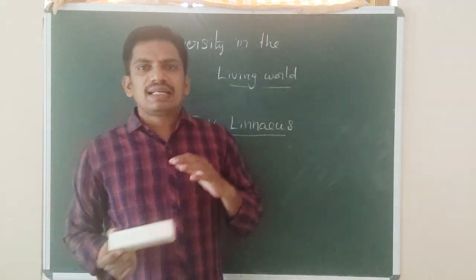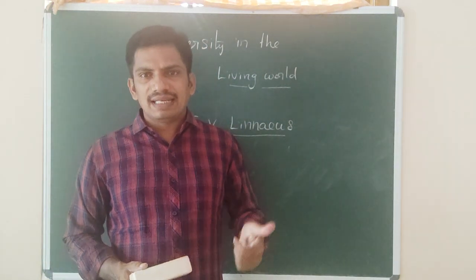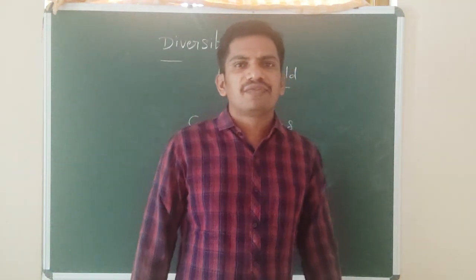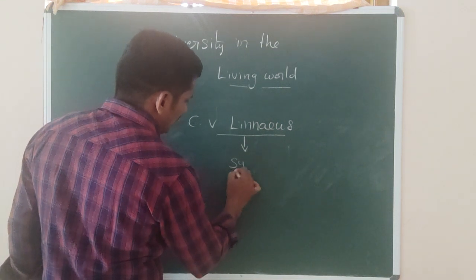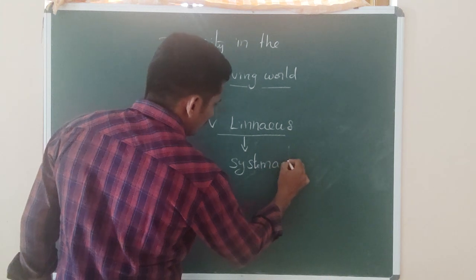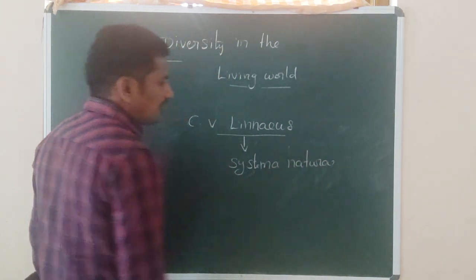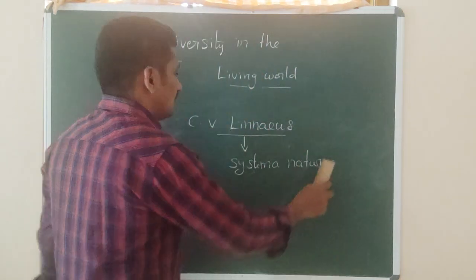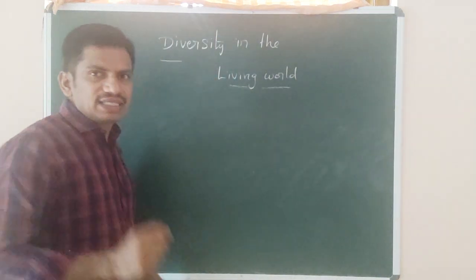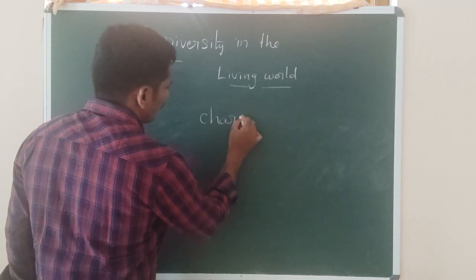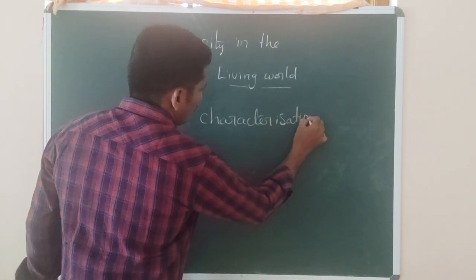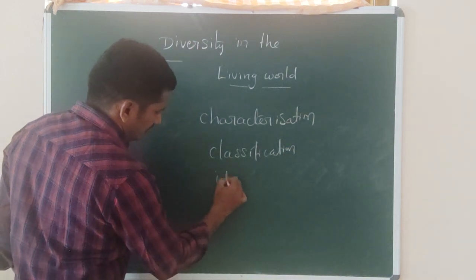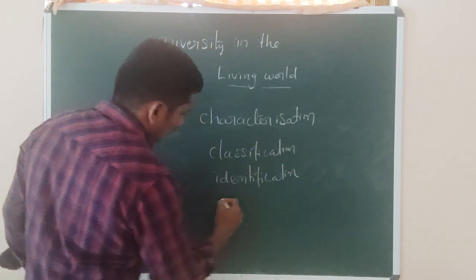Taxonomy deals with the characterization, identification, classification, and naming of organisms. Carolus von Linnaeus is considered the father of taxonomy. His publication, Systema Naturae, classified different organisms. The classification in Systema Naturae consists of characterization, classification, identification, and nomenclature.